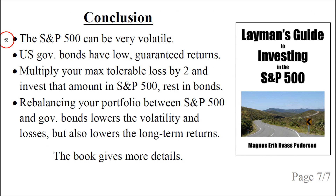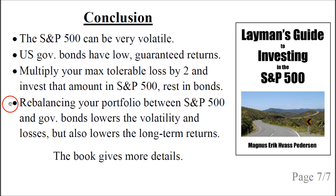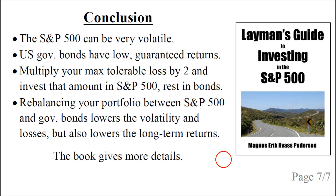So the conclusion is that the S&P 500 can be very volatile and US government bonds have low but guaranteed returns. To allocate your portfolio between the S&P 500 and US government bonds, you should multiply your max tolerable loss by two and invest that amount in the S&P 500 and the rest in US government bonds with a maturity of one year or less. If you rebalance your portfolio between the S&P 500 and US government bonds once a year, then you lower the volatility and the losses, but it also lowers the long-term returns compared to a full investment in the S&P 500. You can see more details in the book — click on the image or the link below the video. Thank you.